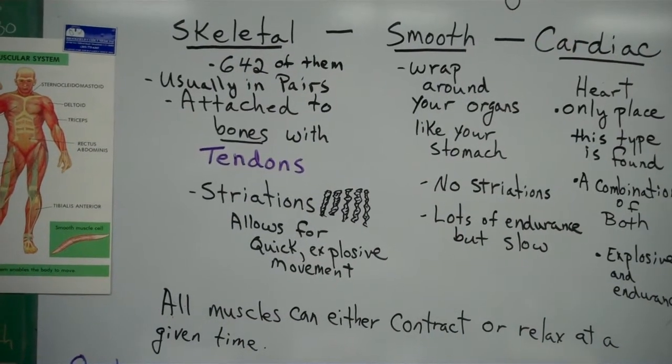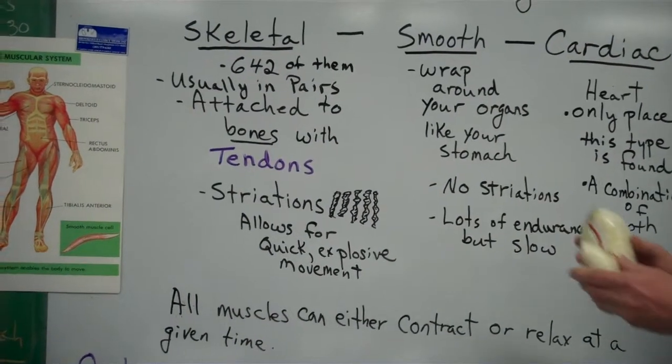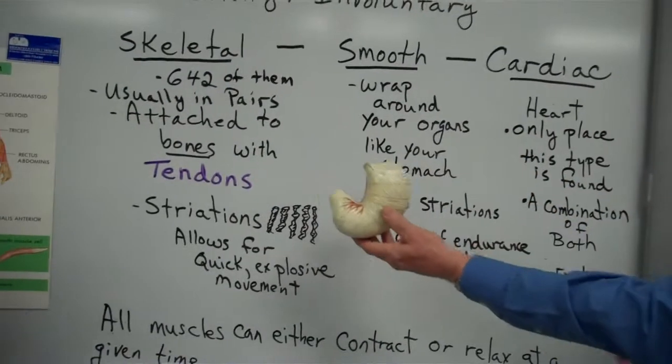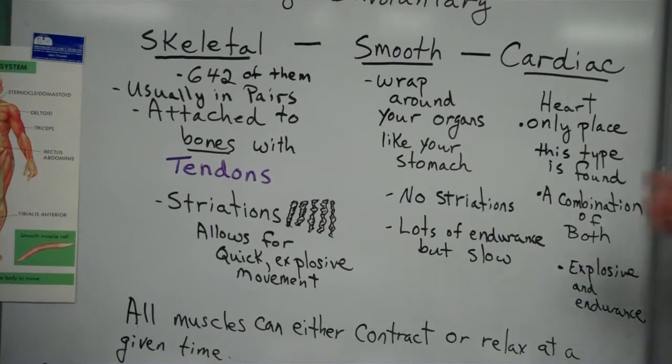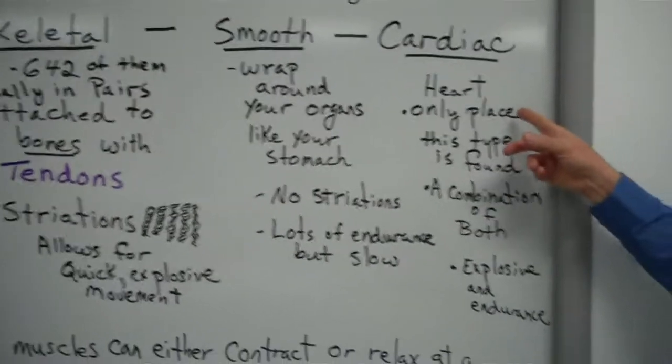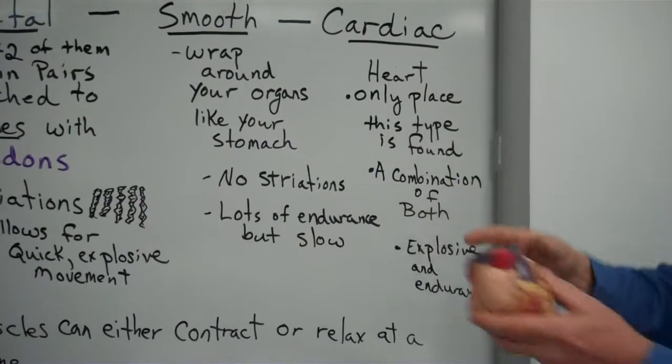These are wrapped around your organs. Like I just removed Mr. Maxwell's stomach right here. That looks like his stomach. Three meatballs in there. There you go. And then we also have cardiac, which is only found in the heart.